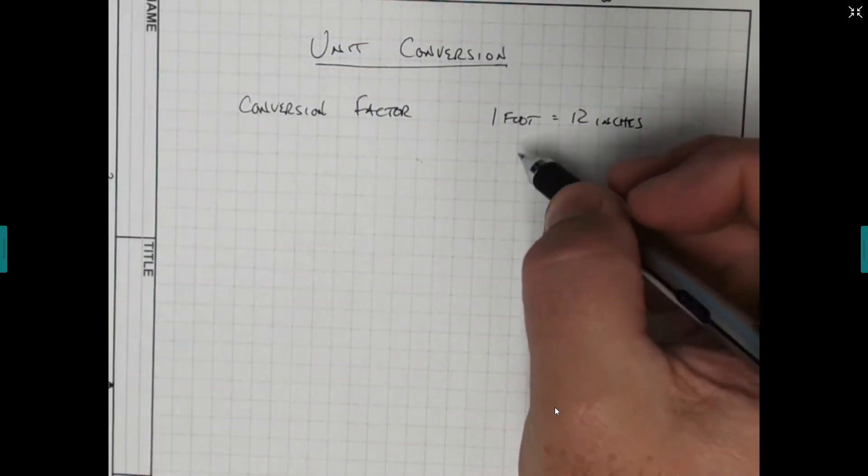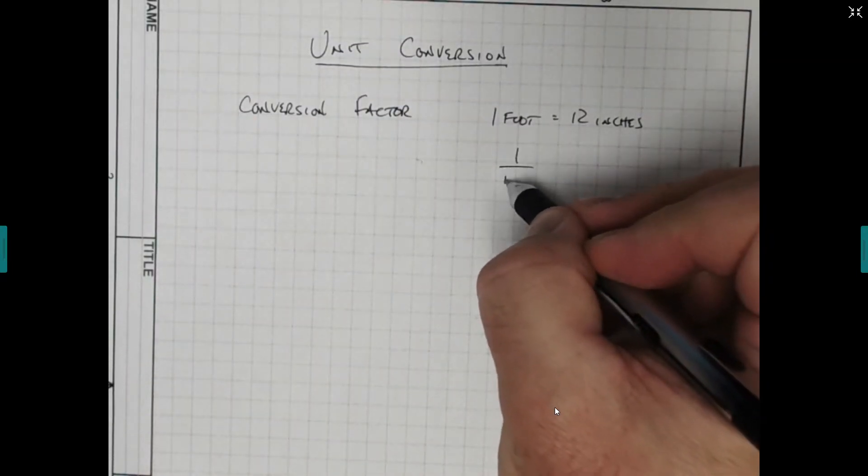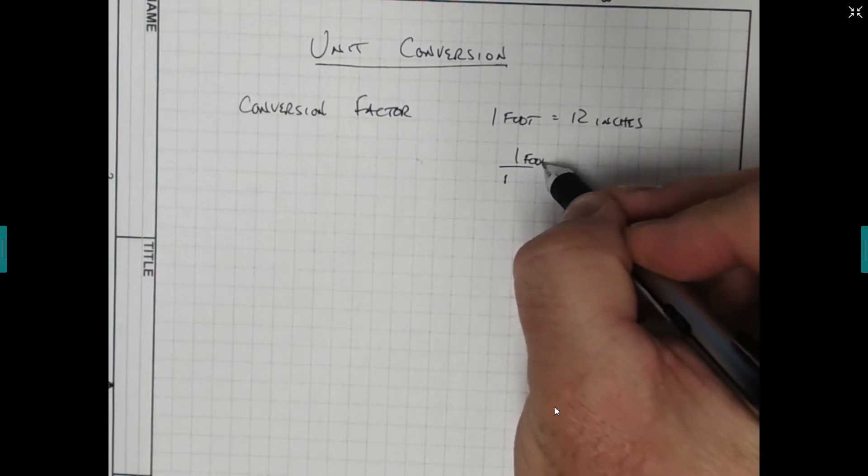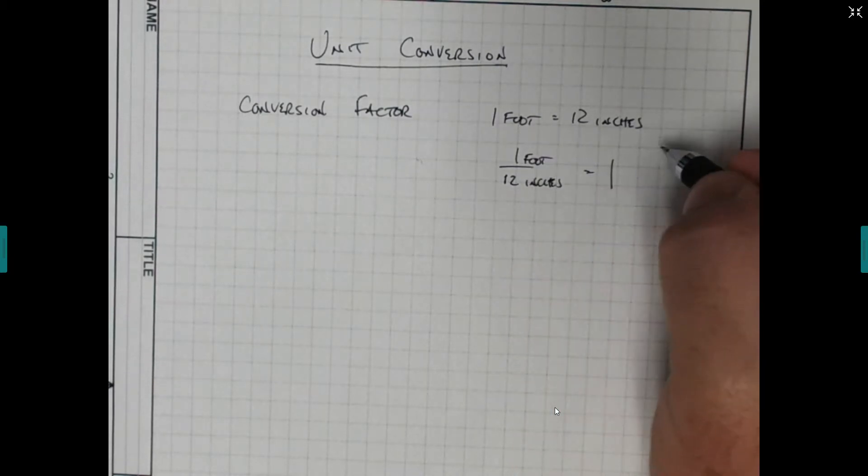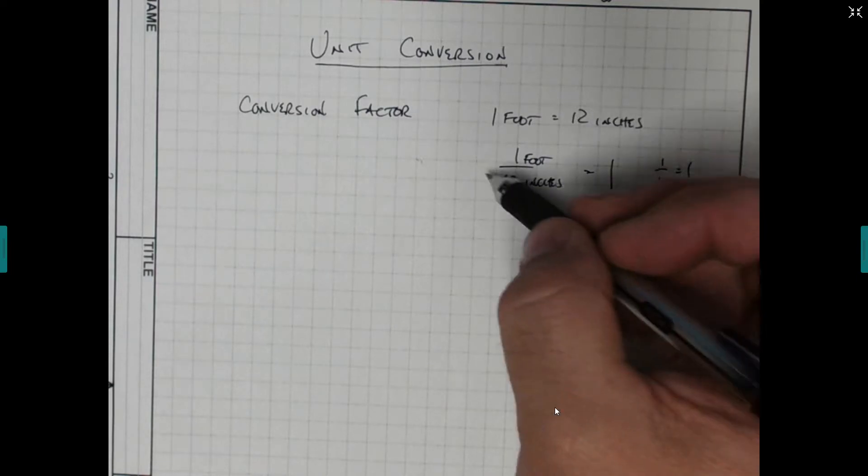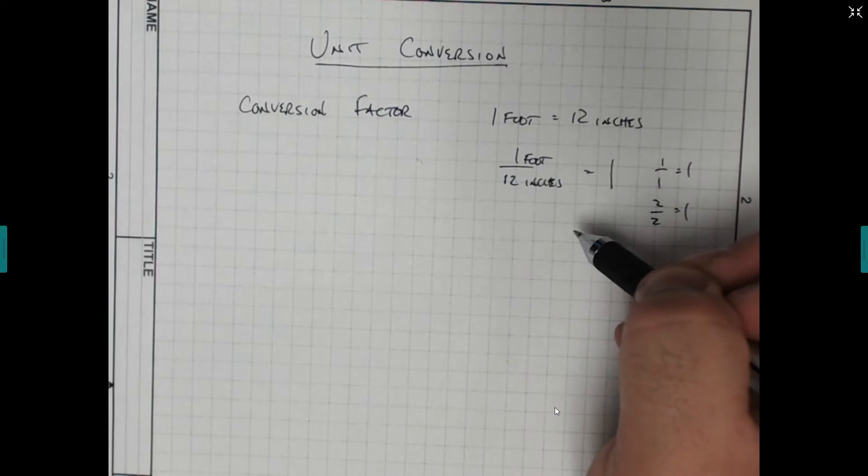All we're going to do, if we take this and we put one foot over 12 inches, that's the same as saying 1, because those two are equal to each other. And any time we have something over itself, 1 over 1 equals 1, 2 over 2 equals 1, so on and so on. 1 foot and 12 inches are the same thing, just like 2 equals 2. So all we're doing is creating these conversion factors.